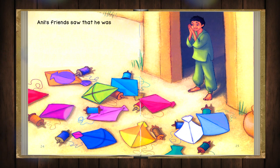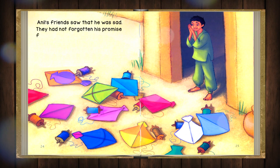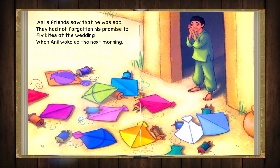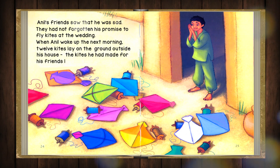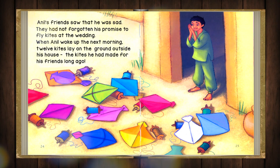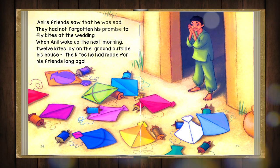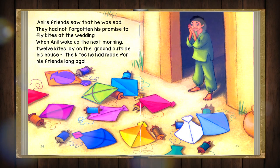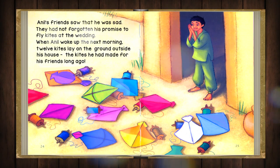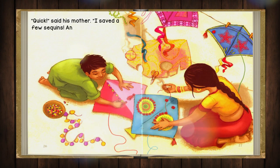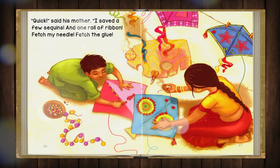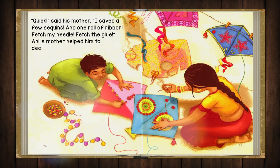Anil's friends saw that he was sad. They had not forgotten his promise to fly kites at the wedding. When Anil woke up the next morning, twelve kites lay on the ground outside his house — the kites he had made for his friends long ago. 'Quick,' said his mother. 'I saved a few sequins and a roll of ribbon. Fetch my needle, fetch the glue.' Anil's mother helped him to decorate the kites.